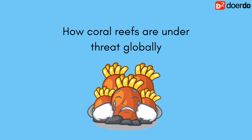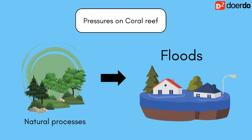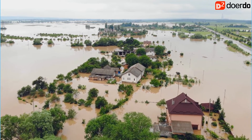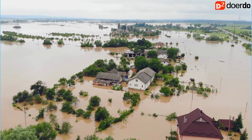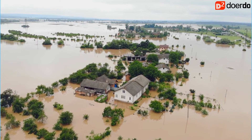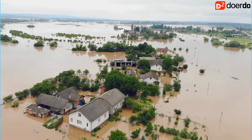Now let's understand how coral reefs are under threat globally. Coral reefs are under pressure from both natural processes and human activities. Natural processes such as floods may damage the coral reefs — the topsoil, sediments, rubbish, pesticides, and fertilizers from flooded areas may be washed through the river system out to the sea, suffocating the reefs and other habitats.